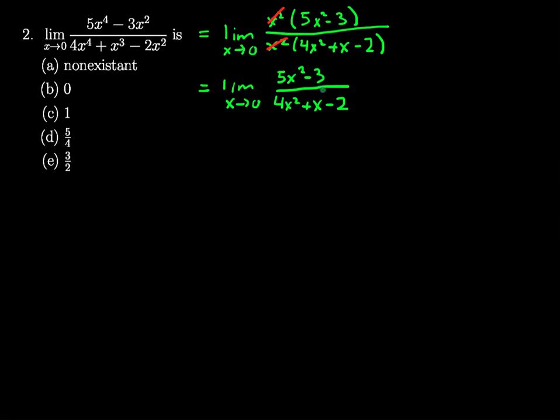And now when we put in our zeros, we aren't left with a zero over zero. So we can actually plug in our zeros here because the denominator does not go to zero.